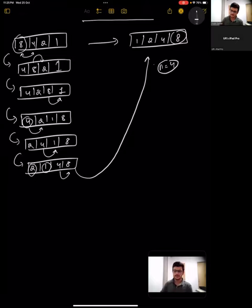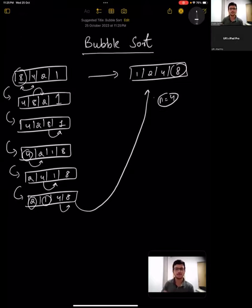So students, this is the bubble sort algorithm and bubble sort has many functionalities in computer science. It's used to sort files, it's used to sort disk space etc. Thank you.